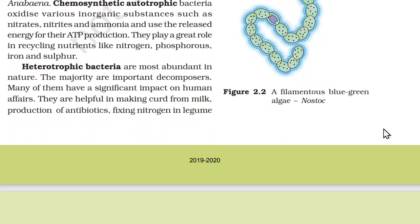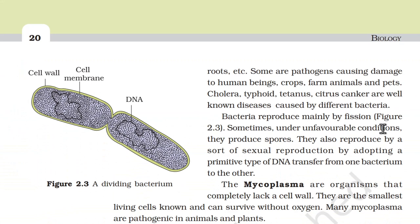Heterotrophic bacteria are the most abundant in nature and the majority are important decomposers. Many have significant impact on human affairs. They are helpful in making curd from milk, production of antibiotics, fixing nitrogen in legume roots, etc. Some are pathogens causing damage to human beings, crops, farm animals, and pets. Cholera, typhoid, tetanus, and citrus canker are well-known diseases caused by different bacteria.